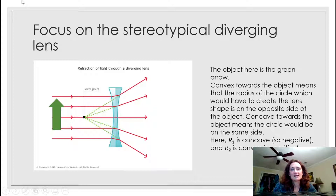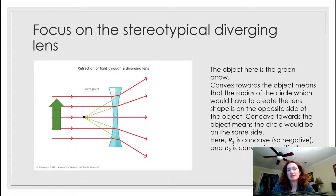Let's look at the stereotypical diverging lens. In the last lecture where we covered the thin lens equation, I spent a lot of time talking about converging lenses, which are fatter in the middle. So I'd like to do some examples and talk a little bit more about diverging lenses in this lecture.